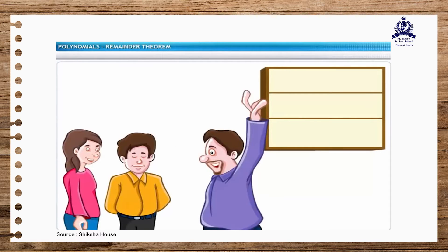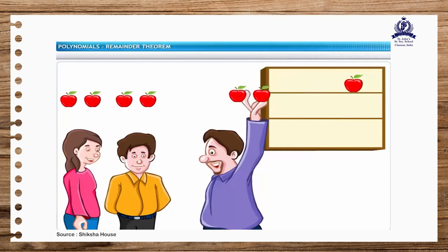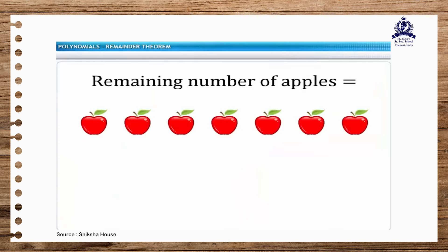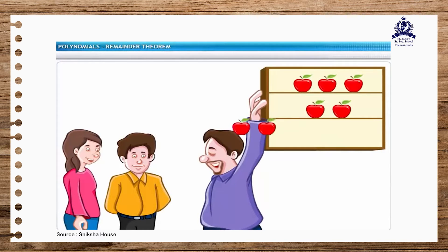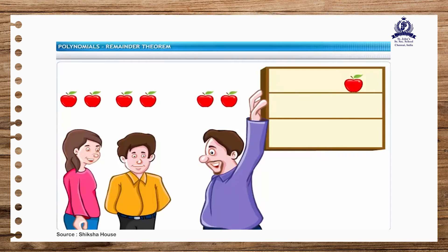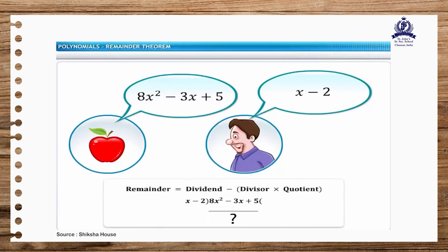Here is a simple problem that involves division. John has 7 apples. He shares the apples with his friends JC and Jill, so that all 3 of them get an equal number of apples. How many apples remain with John? Using the division rule, each one gets 2 apples, meaning 6 apples are distributed. The remainder equals 7 minus 3 times 2, which equals 1. If the number of apples and recipients were polynomials, the remainder can be calculated quickly using the remainder theorem.